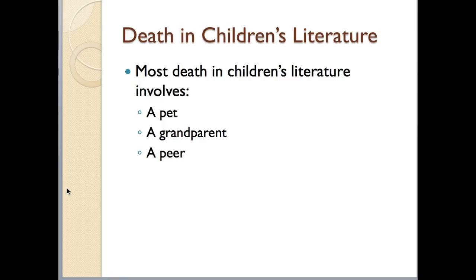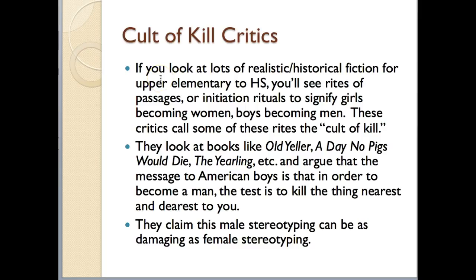When we think about death in children's literature and how it shows up most often, what we see are stories that involve the death of a pet, a grandparent, or a peer. Publishers tend to put out stories like that because having the death of a sibling or even a parent is a little too close to home for children. So for elementary school age children, if there's going to be death, it typically involves the death of a pet, a grandparent, or a peer.